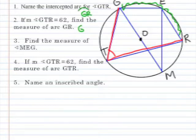Number two. If angle GTR is 62, find the measure of arc GR. As we discussed in the previous video, the inscribed angle is always half as long as the measure of the arc. So if the angle is 62, the arc has to be twice as much. So arc GR must be 124 degrees.